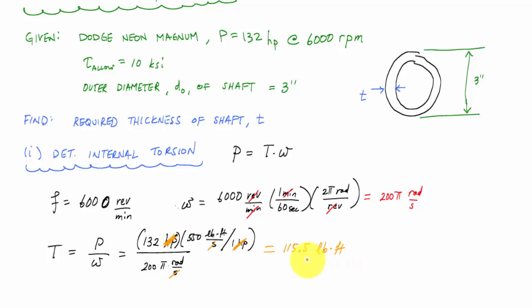And I've got to convert this horsepower to pound feet per second, which is this ratio: 550 pound feet per second for every horsepower. And when I complete this calculation, I will get 115.5 pound feet. So the internal torque that my shaft is experiencing is 115.5 pound feet. And I would say this is the hard part.